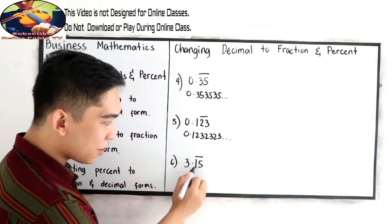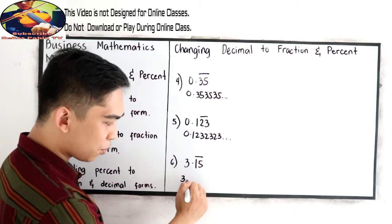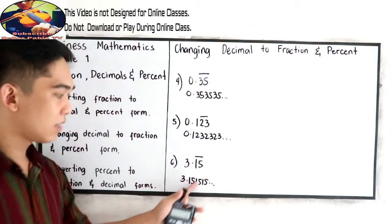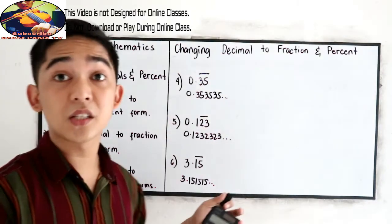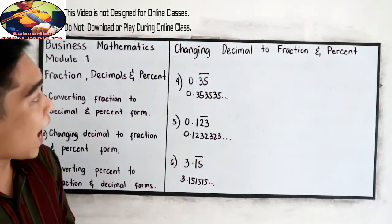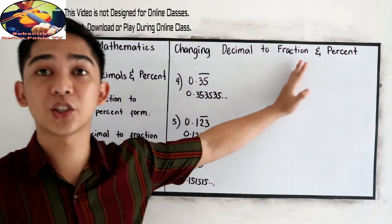Number five, 0.123 with our bar in 2 and 3. 0.123, 23, 23, 23. That's equivalent of this decimal. And 3.15 with a bar in our decimal point, that is 3.15, 15, 15, and the ellipse sign. Actually, this is a grade 7 lesson. How we're going to write the following decimals into fraction form.